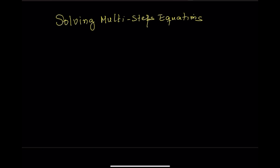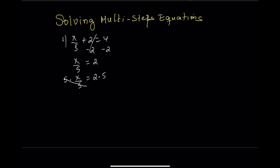Let's get started. Equation 1: x divided by 5 plus 2 equals 4. Step 1: subtract 2 from both sides — x divided by 5 equals 2. Step 2: multiply both sides by 5 — x equals 10.